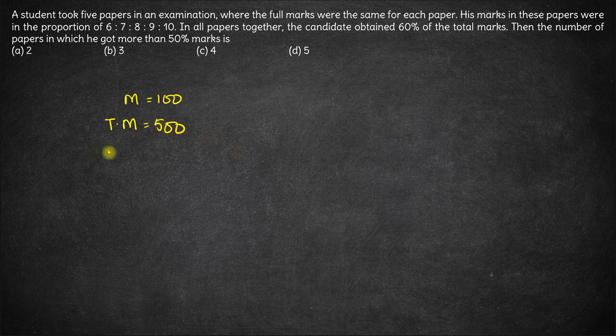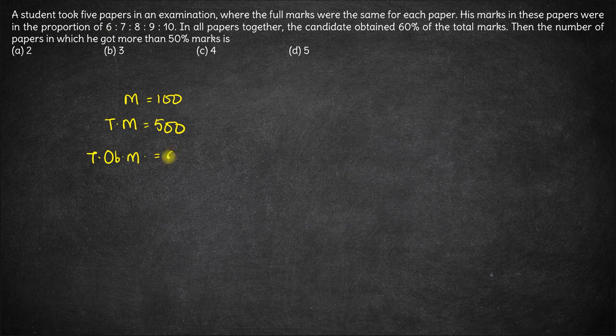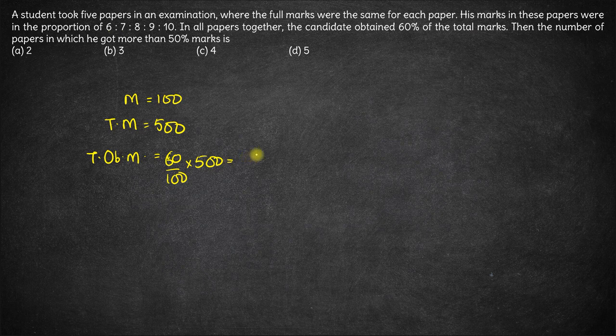Now what will be the total obtained marks? We know he got 60% of the total marks. So 60% of 500. 60% of 500 is 300.